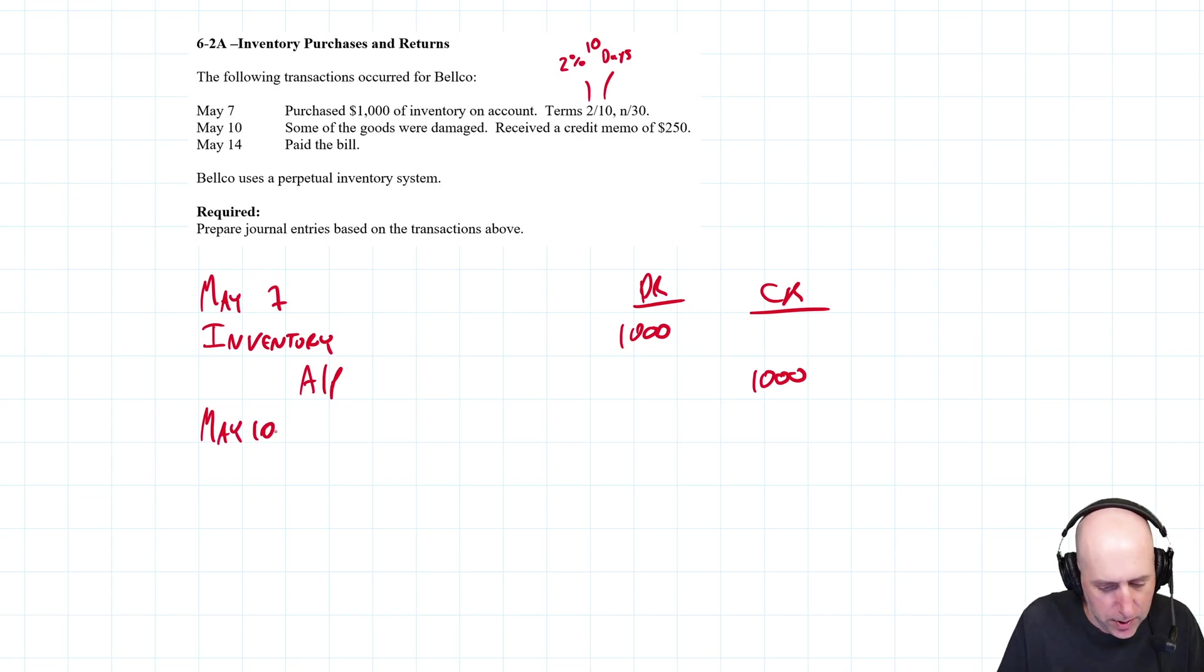May 10, what's happening? Well, some of the goods were damaged and we got a credit memo. What's a credit memo? We emailed them, maybe showed them pictures, texted them pictures and said, look, the stuff you gave us, a lot of this stuff is garbage.